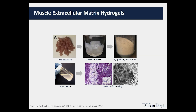We take our starting materials from pigs — in this case, the image here is porcine muscle, specifically porcine loin — which we chop into small pieces. We decellularize it, removing all of the cells and leaving behind just the extracellular matrix. We then lyophilize it, meaning freeze dry it, mill it into a fine powder, and then use an enzyme to digest it and make it into a liquid.